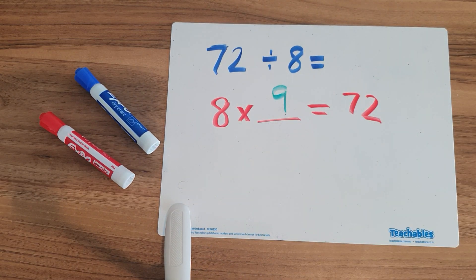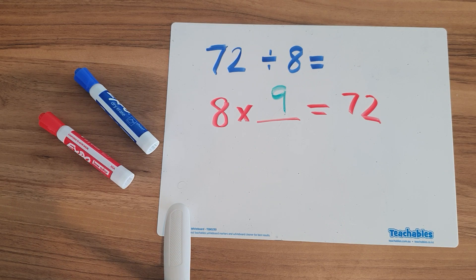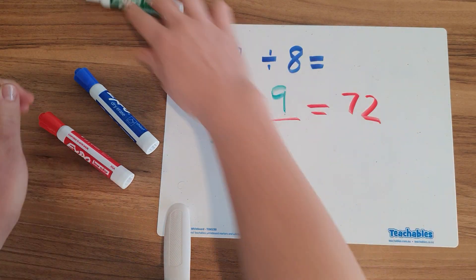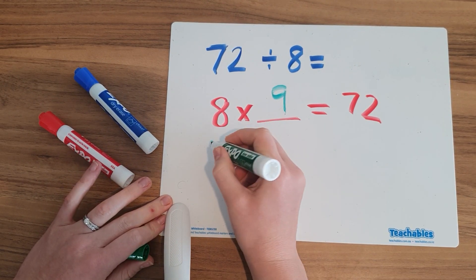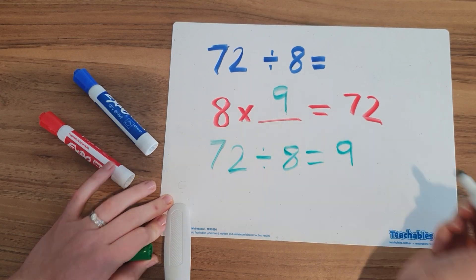So I can check it like that. I could check it against a multiplication table. But now I know that my answer to the top question, 72 divided by 8 equals 9.